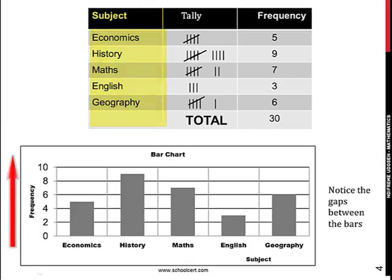This is the axis for the frequency. So for economics, the frequency is 5. So we have that our bar chart starts here at 5, and we have this bar here. Then the next subject is history, and we place our bar chart for history here. This is where it stops. History is 9.